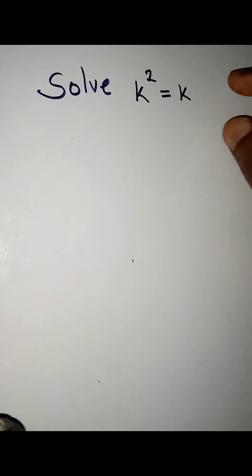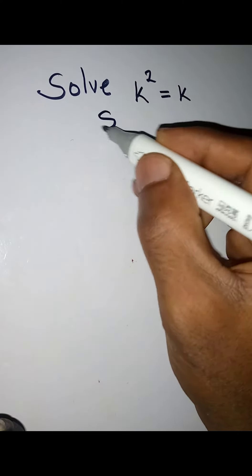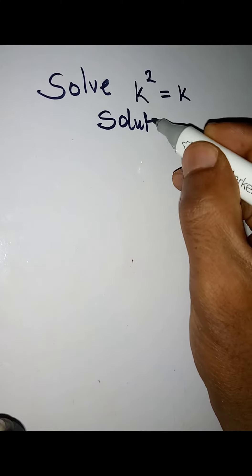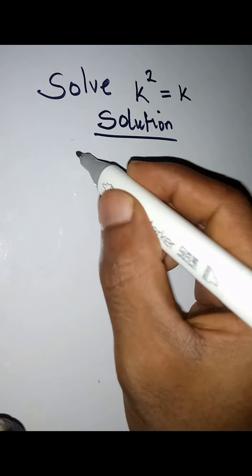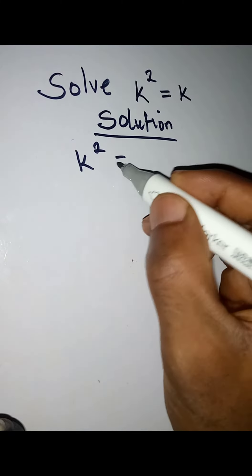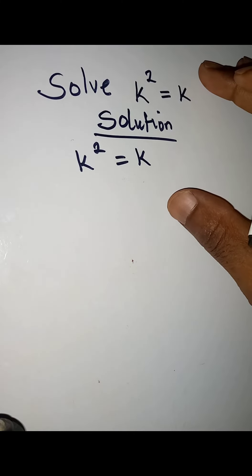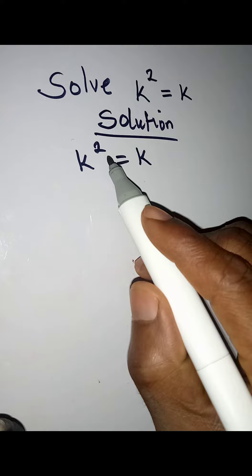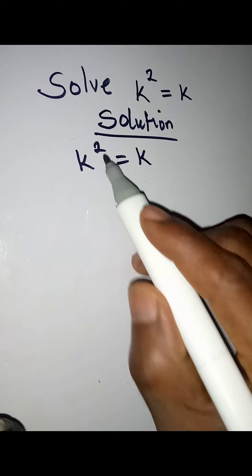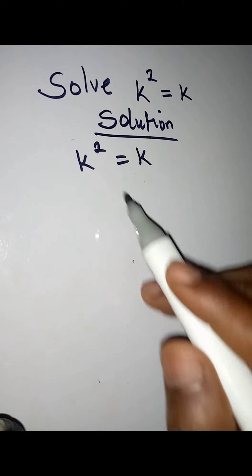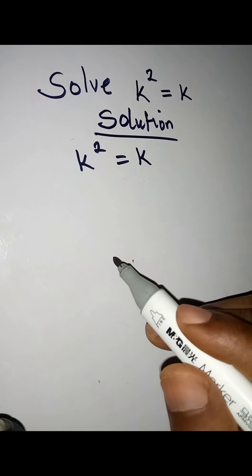Hello everyone, let's solve this problem. We have k² = k. Don't forget that this is still a quadratic equation because of the highest power of 2 and the equality sign.